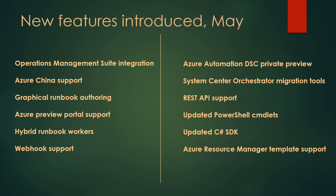We also introduced Azure Automation DSC private preview, a REST API, and about 70 PowerShell commandlets so everything you can do in the service has PowerShell commandlet support, as well as ARM template support — the ability to declaratively say 'I want these runbooks in this region, and I want these jobs to kick off only after this SQL database is deployed,' with all that dependency mapping you can do with Azure Resource Manager templates.